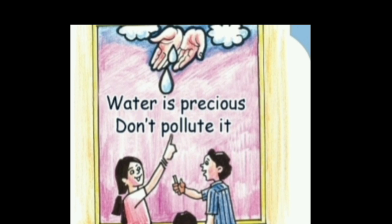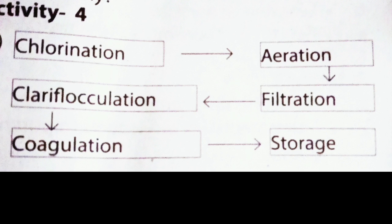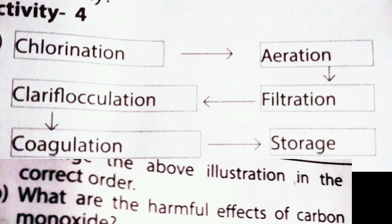Now let me ask a question. The following processes are given: Chlorination, Aeration, Filtration, Clarification, Coagulation, Storage. We have to arrange them in the correct order. The correct order is: Aeration, Coagulation, Clarifloculation, Filtration, Chlorination, Storage.